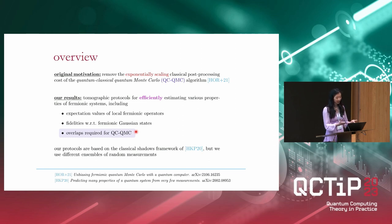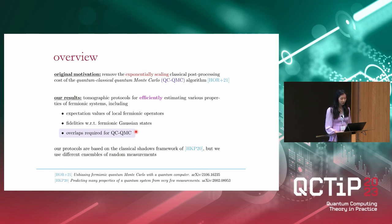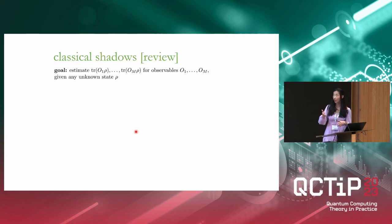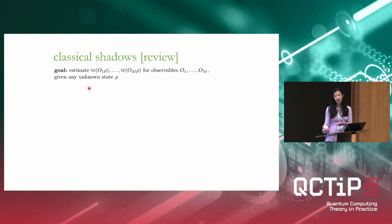These other measurement ensembles are going to be given by random matchgate circuits, which I'll explain shortly. But first, let's review the classical shadows framework. The goal is to estimate the expectation values of multiple observables O1 to OM with respect to an arbitrary unknown state rho, assuming we're given copies of rho along with classical descriptions of these observables.